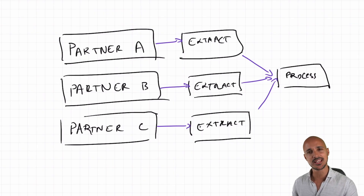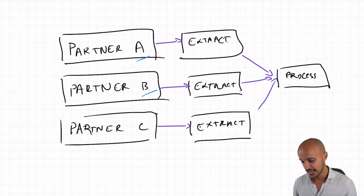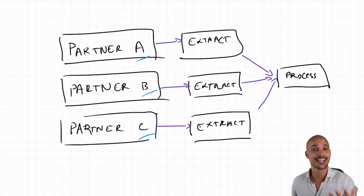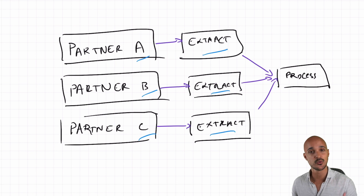To better explain a concept and why it is important, I think it's great to start from a very concrete example. Let's imagine that you have three different partners — Partner A, B, and C — where those partners will send you data at different times. For example, Partner A might send you data at 9am, then Partner B at 9:30am and Partner C at 10am. As soon as you have received that data you want to extract it with other tasks, and then last but not least you want to process all of that data with a final task.